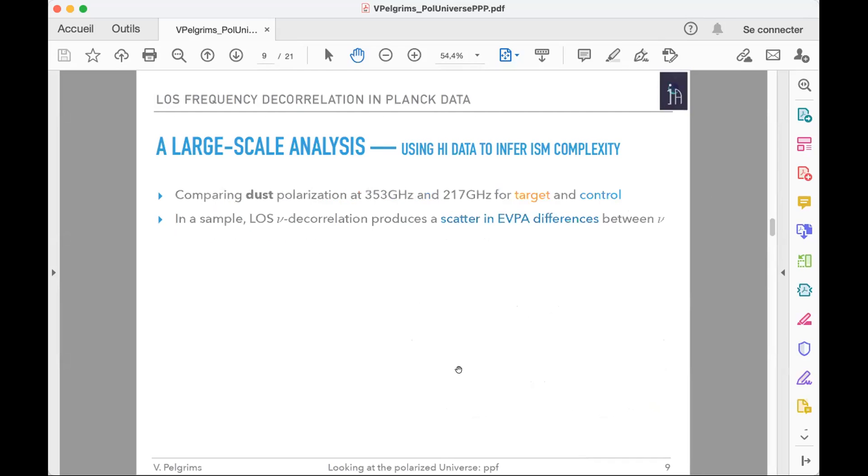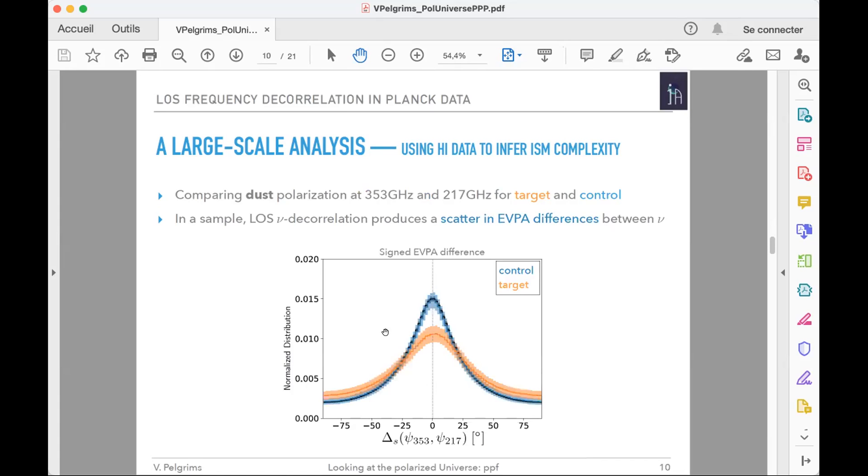Now we have the sample of pixels and we move to the dust polarization maps at 353 and 217 gigahertz from Planck. We compute the EVPA differences in both target and control samples. What to expect? Line-of-sight frequency decorrelation would produce a scatter in the EVPA differences, a scatter that wouldn't be observed if the signal isn't there.